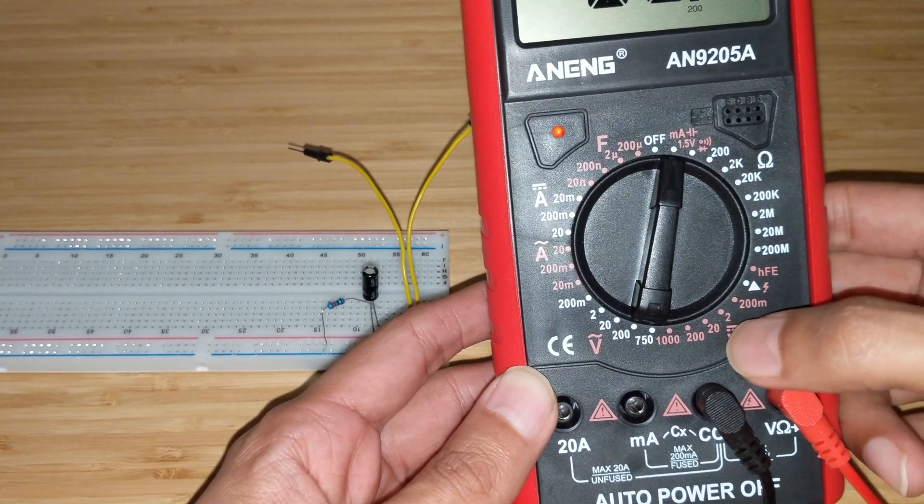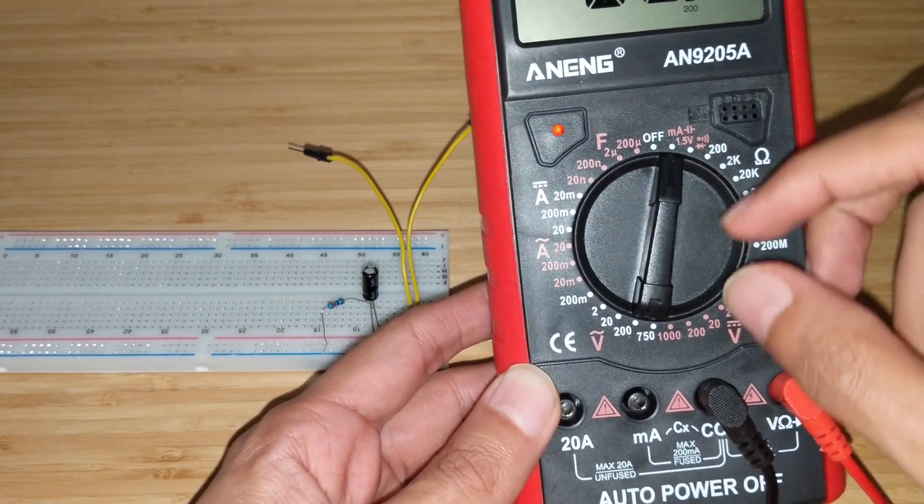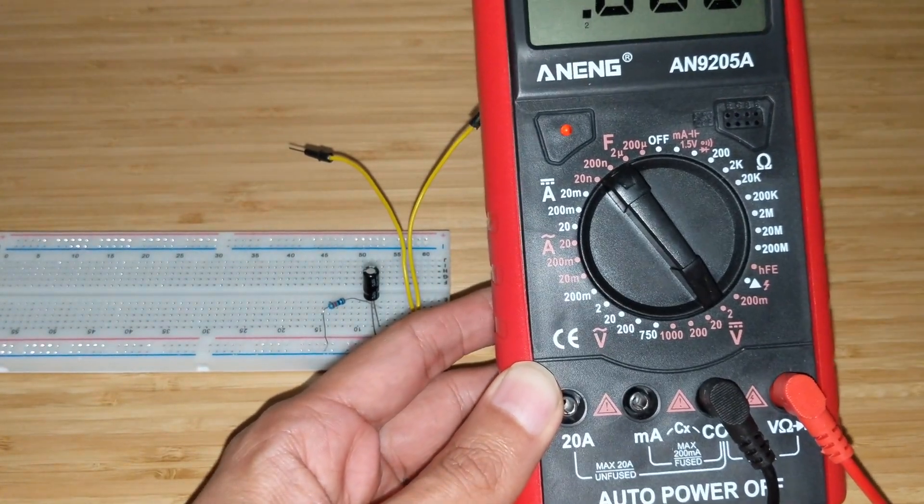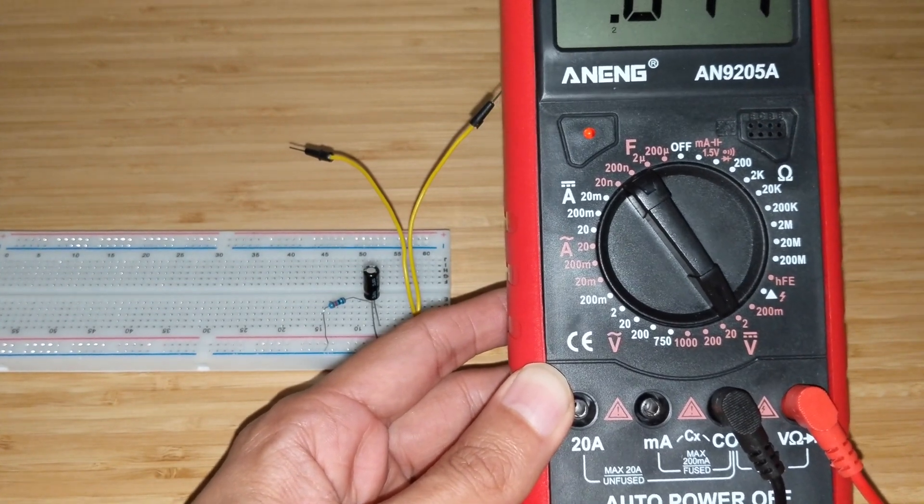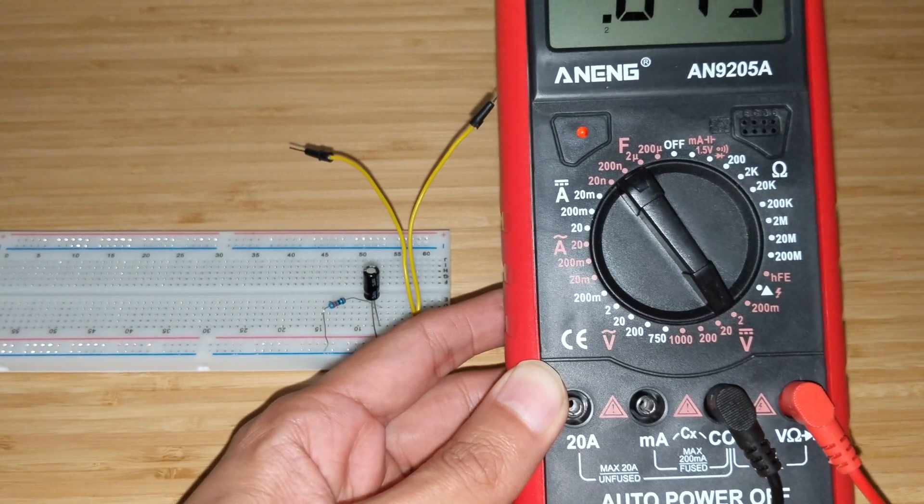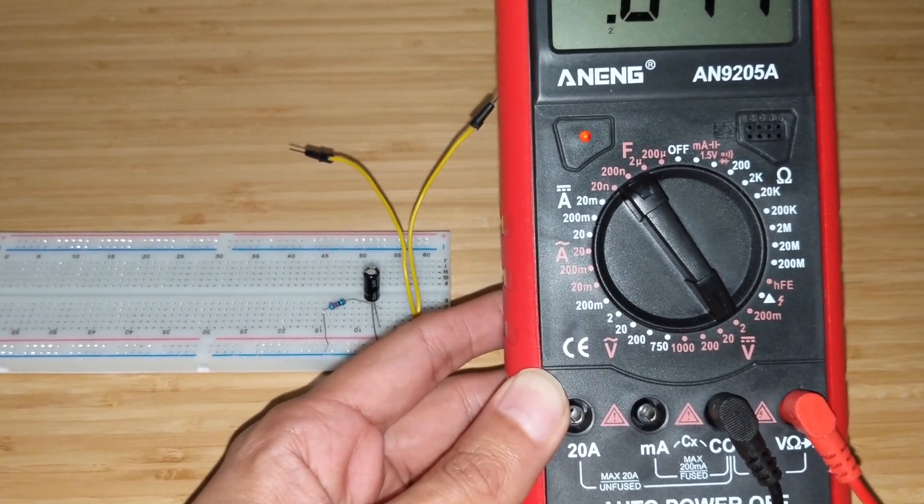Now the puzzle that I had in my mind at that point in time was that I already have a way of measuring the voltage, which is here. I can put the indicator on two volts and I can measure the battery's voltage. Why do I need a separate option?